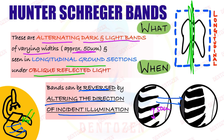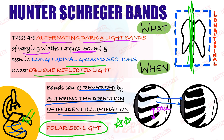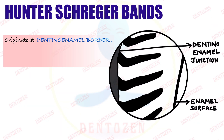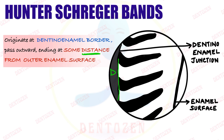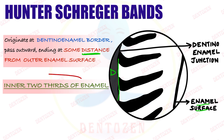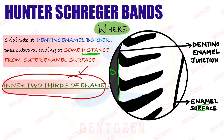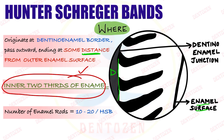These bands can also be seen in polarized light — that can be an entrance exam question. So they are seen in reflected light and in polarized light. Now, where are they seen? They originate at the dentino-enamel junction and end just below the enamel surface. They are present in the inner two-thirds of the enamel — that is your answer for where they are present.